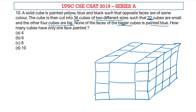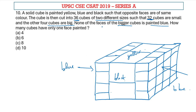Since the bigger cubes cannot take the color blue, the top and bottom portions will be yellow, the front and back portions will be black, and the two side faces will be blue.